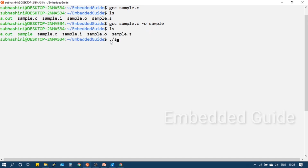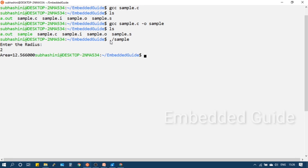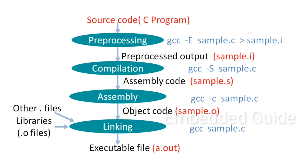Now I will enter the area of the circle and run the program. When you compile a program using GCC, the executable file is generated after completing all four compilation stages.